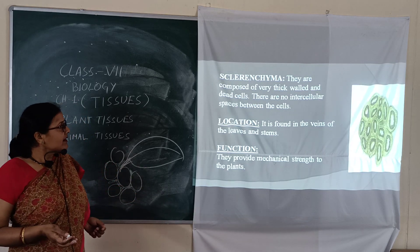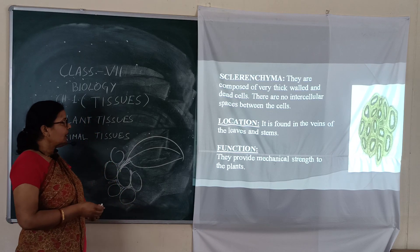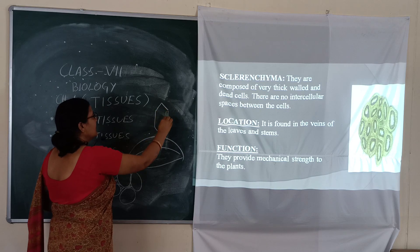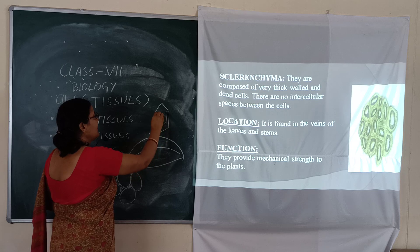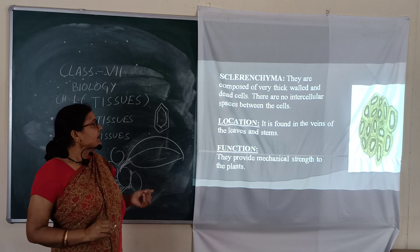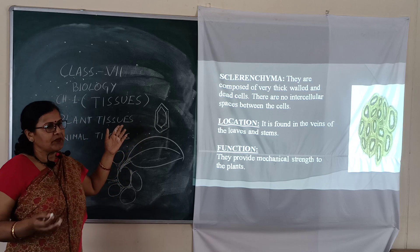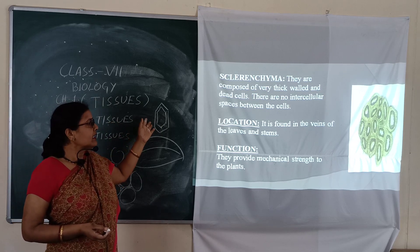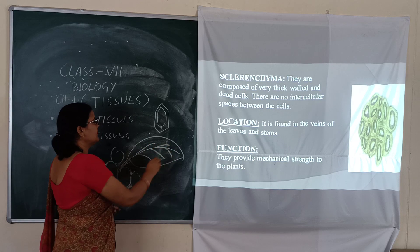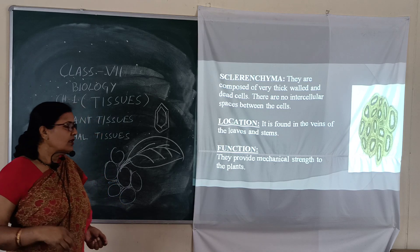Sclerenchyma is composed of very thick walls of hexagonal shape — hexagonal meaning six-sided. These hexagonal cells are dead cells present at the intercellular spaces, found in the seed coat, veins, and walnuts on the leaf. Its function is to provide mechanical strength to the plant.